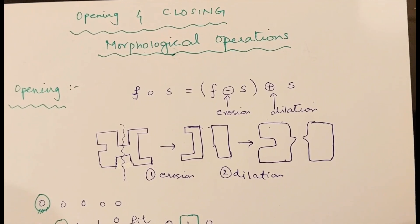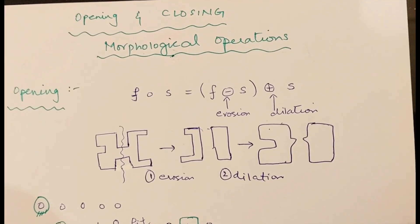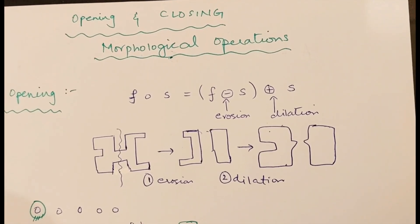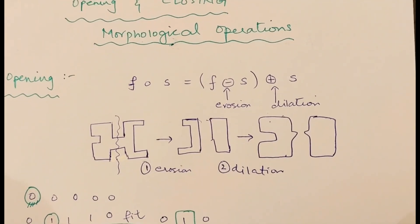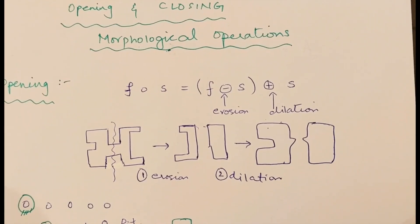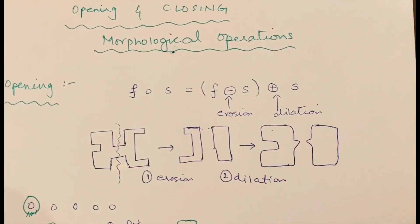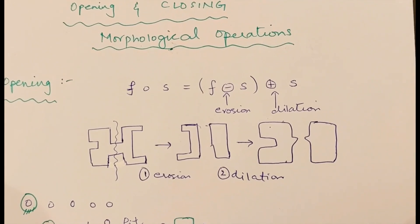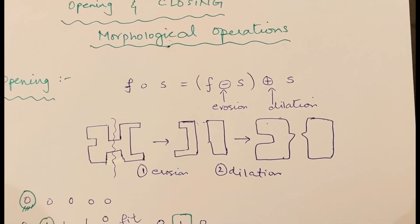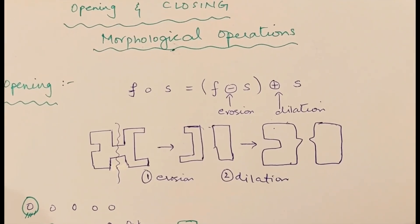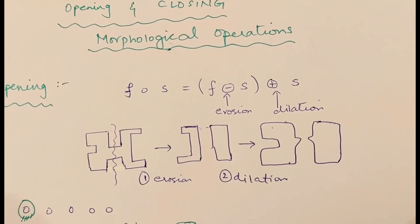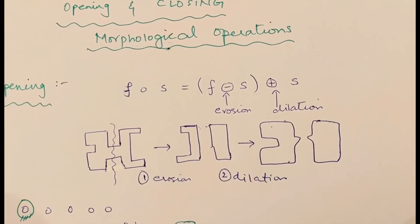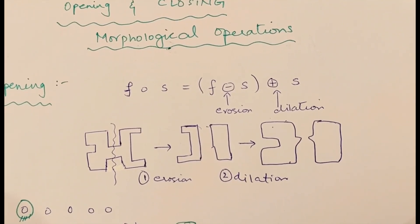Today the topic we are going to explain is the opening and closing operation. Opening and closing are very important morphological operations. Morphological operations are those operations that we perform on images to play with their shapes and sizes. For example, I have drawn this image here, and if you want to open the small joint in this image, this will be called an opening operation. To perform this opening operation, we will take help from two operations: erosion and dilation.